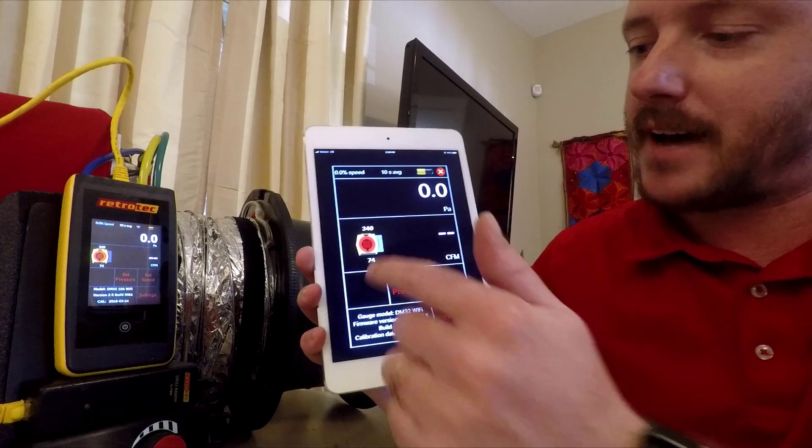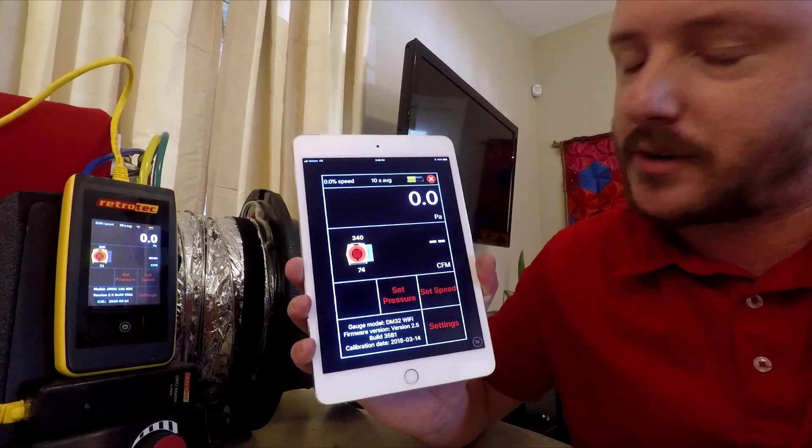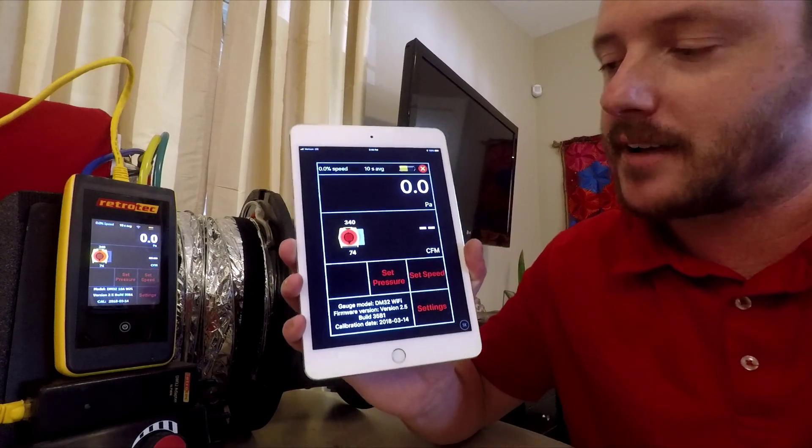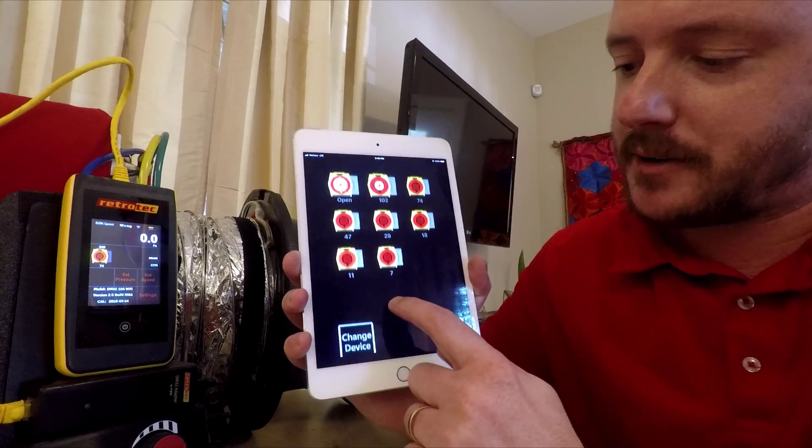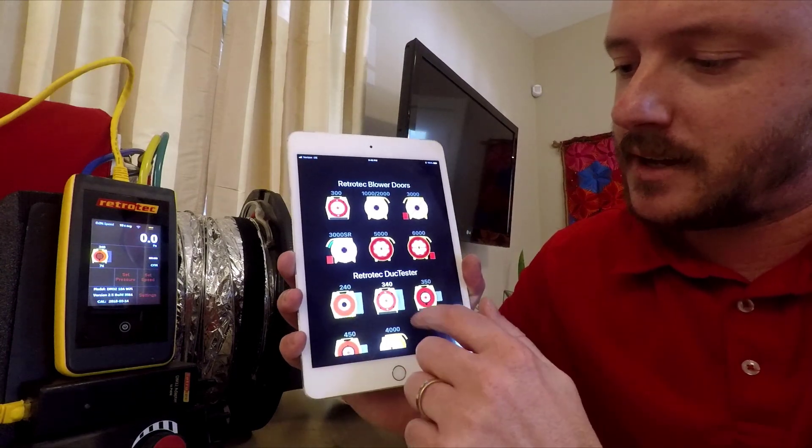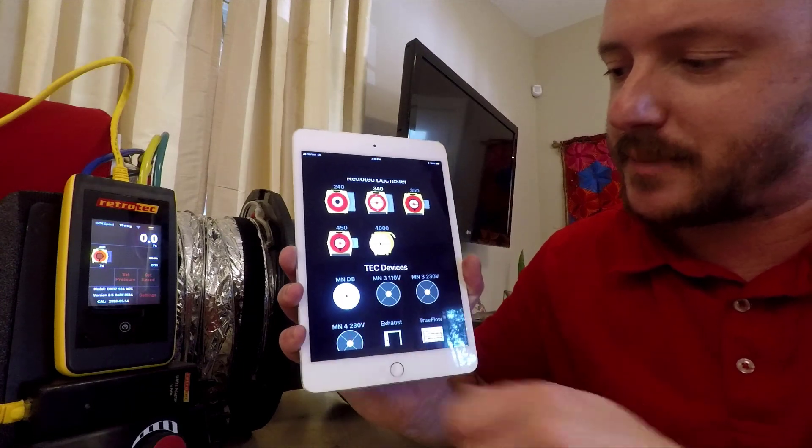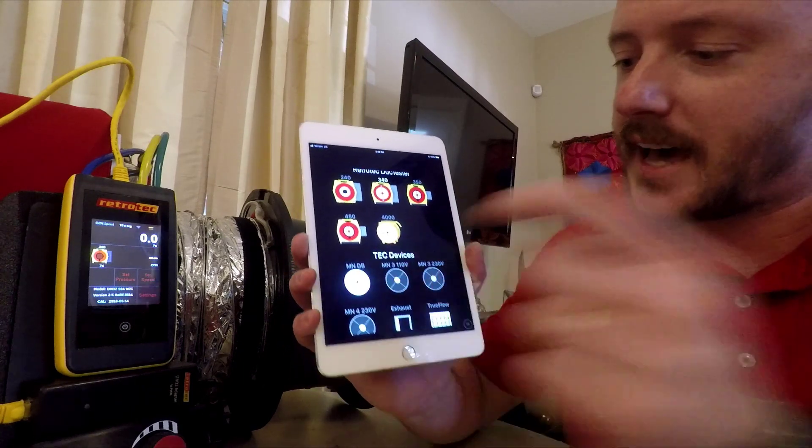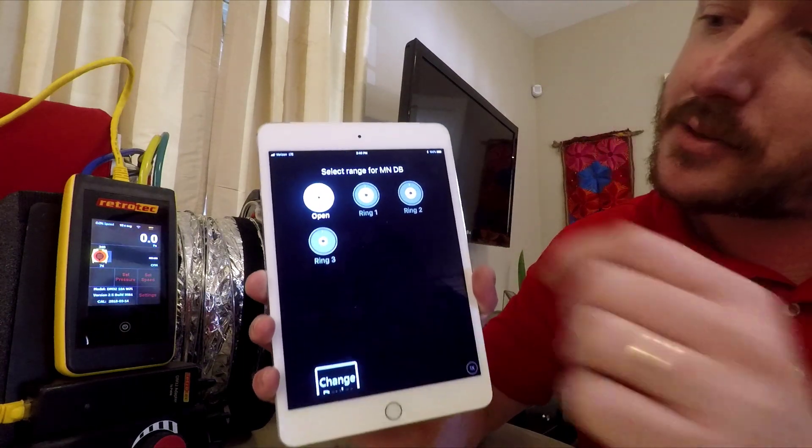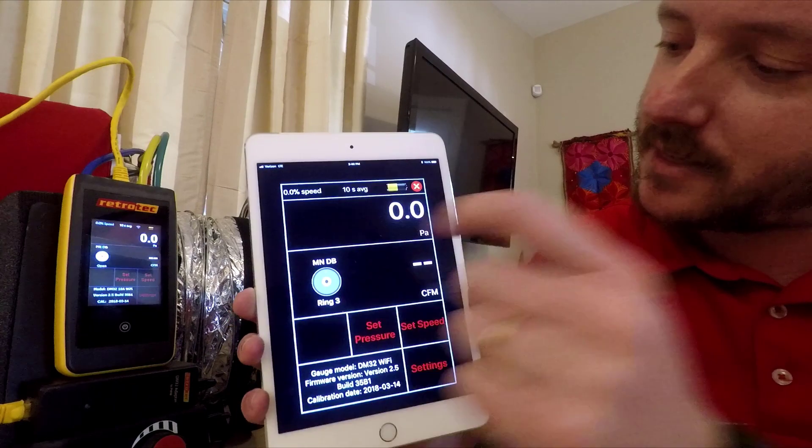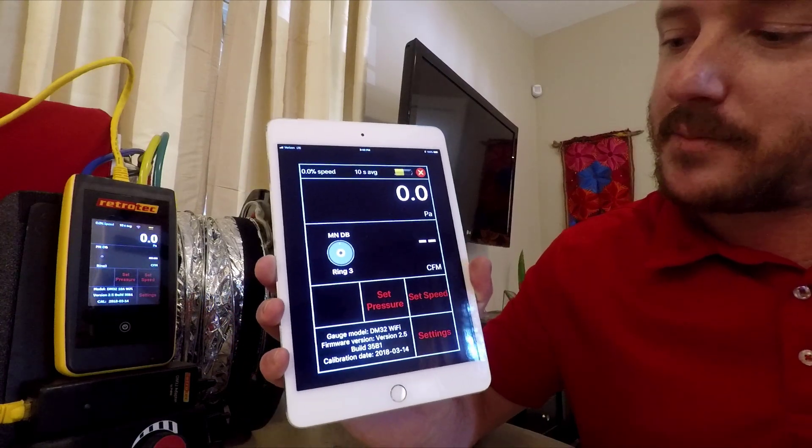So you can see here we have a picture of a RetroTech duct tester. We want to change that because we're going to use the duct blaster fan from TEC. So you just tap on the picture, change device, then you can scroll down. MNDB, that's Minneapolis duct blaster. We'll select that. Then you can change your ring setting. So I have it on ring three. So I will select that. And now we're set up to test.